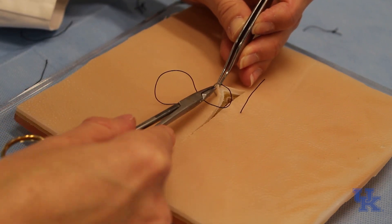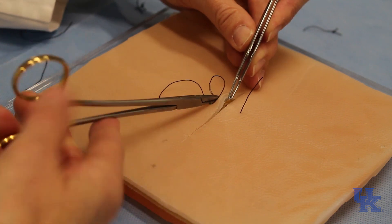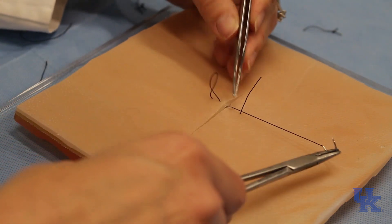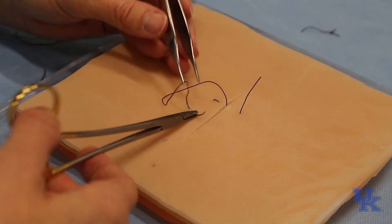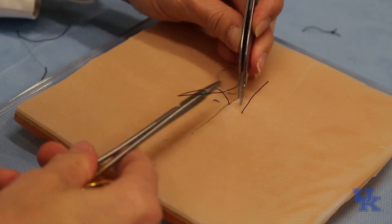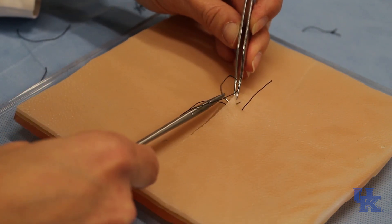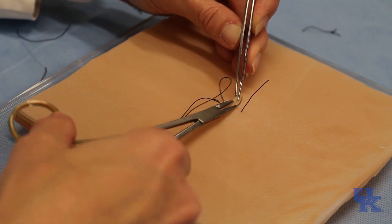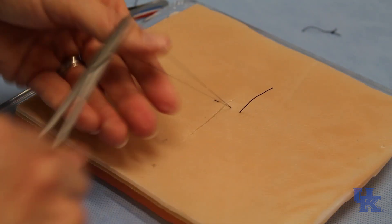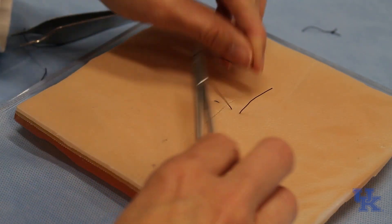You're going to come in close but in the same vertical plane that you've been suturing in. You'll re-grab your needle and come back out equidistant on that side and then you'll tie same way.